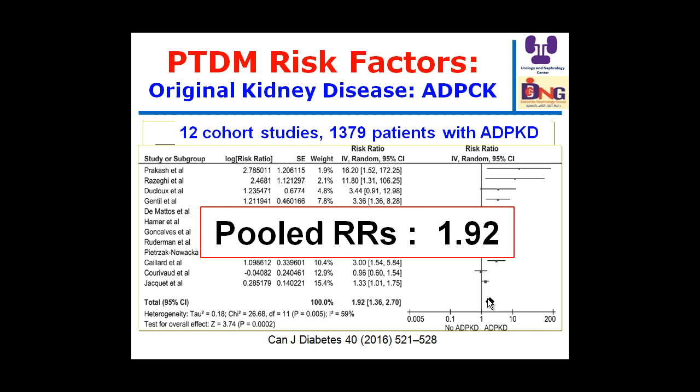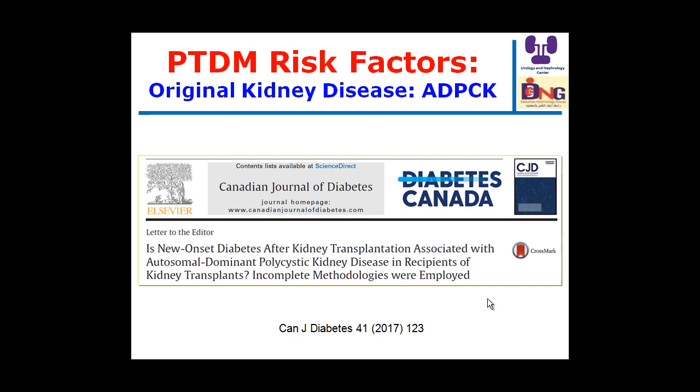Polycystic kidney disease as the original kidney disease is a risk factor. A systematic review and meta-analysis including 12 cohort studies with 1,379 patients showed that autosomal dominant polycystic kidney disease is associated with approximately a two-fold higher risk of post-transplant diabetes compared to non-polycystic kidney disease. The proposed mechanism includes pancreatic cysts in a minority, but insulin resistance is the major mechanism.